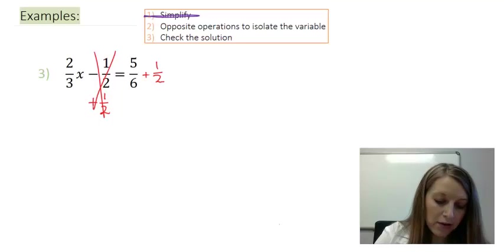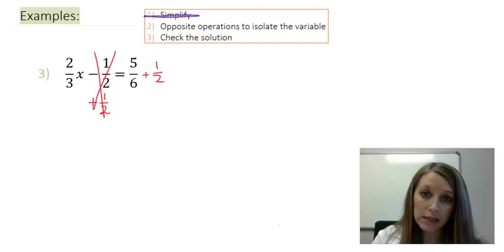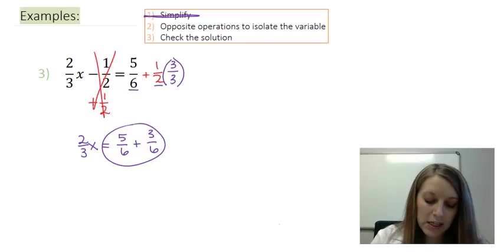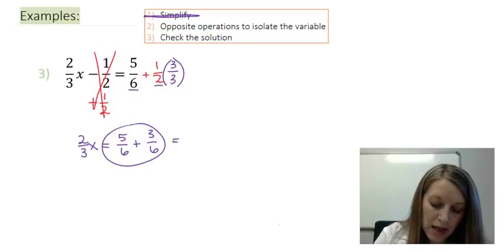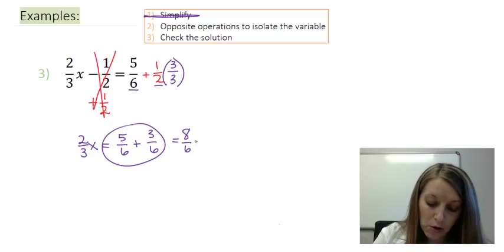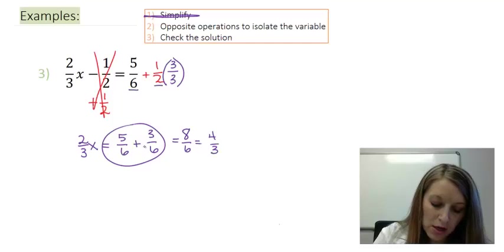That cancels it out on the left. On the right, I can add those by coming up with the least common denominator. Between 6 and 2 is 6, so I multiply my 1 half by 3 over 3. That gives me 2 thirds x on the left and 5 sixths plus 3 sixths on the right. Let me simplify this here. 5 sixths plus 3 sixths gives me 8 sixths. I can reduce both by 2, which gives me 4 thirds.